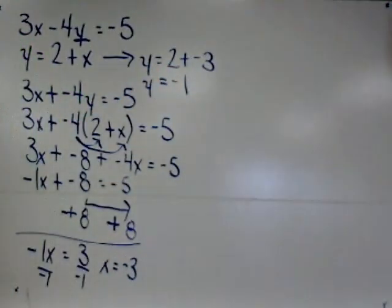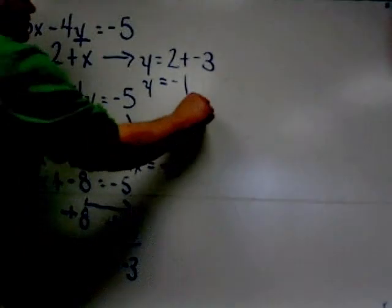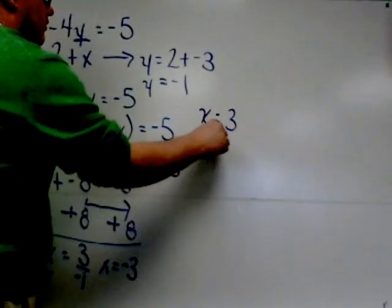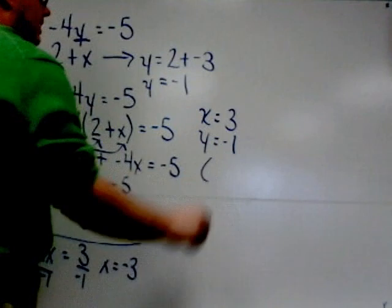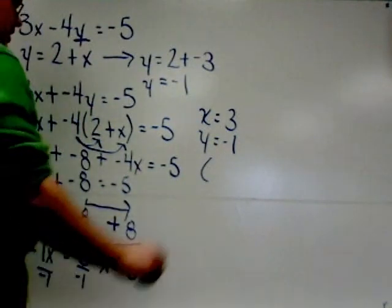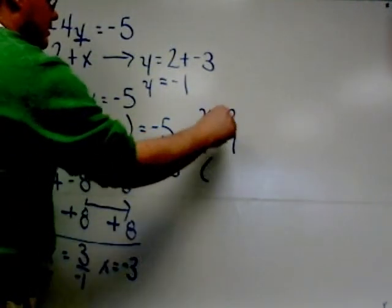So we now have our solutions. We know that x equals negative 3 and y equals negative 1. Or we can state the solution as an ordered pair, negative 3 comma negative 1.